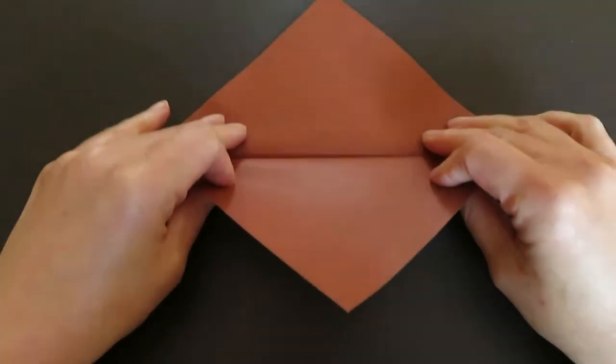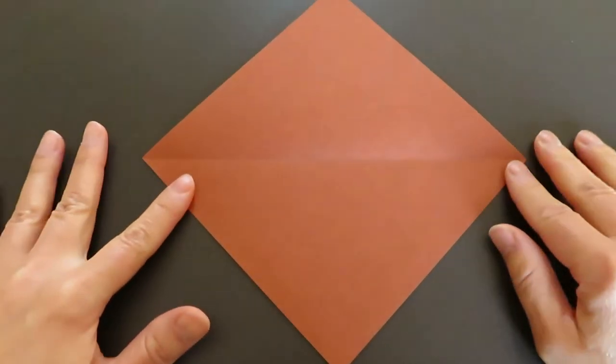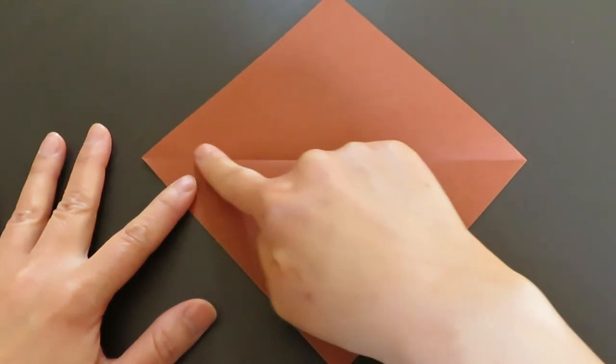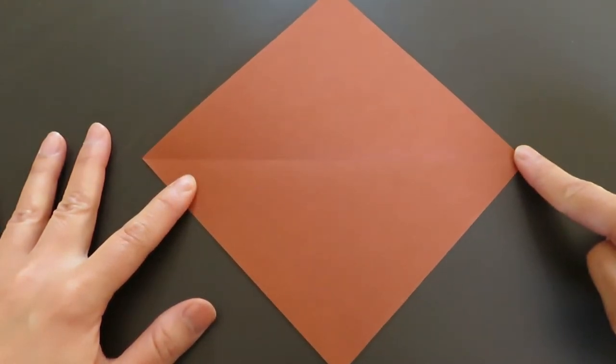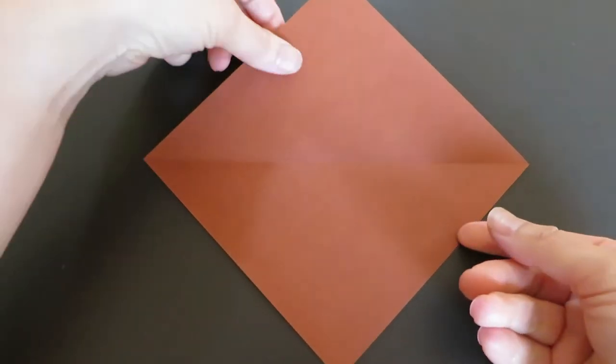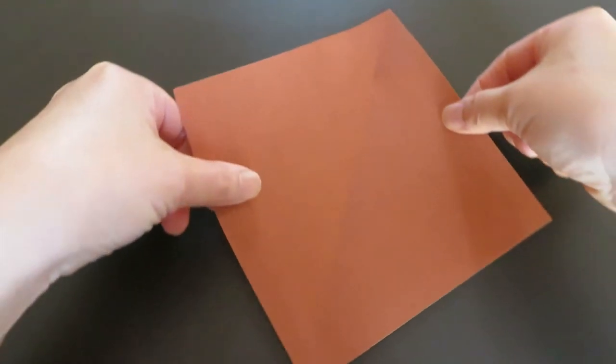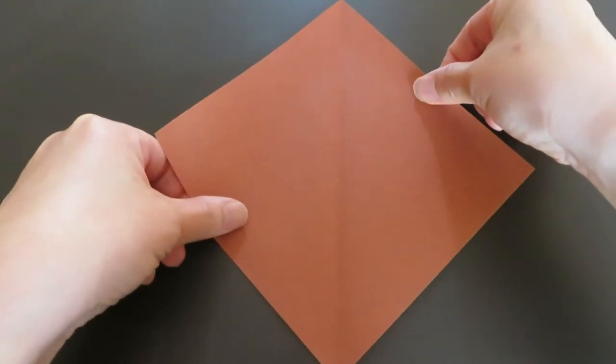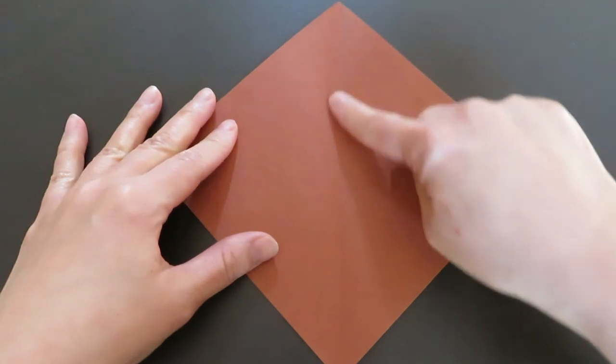Open it up and you can see this horizontal line. You're going to rotate the paper so that the horizontal line becomes a vertical line like this.